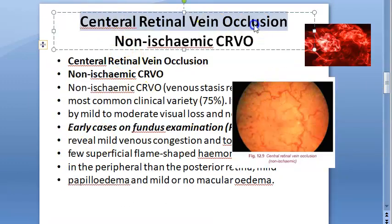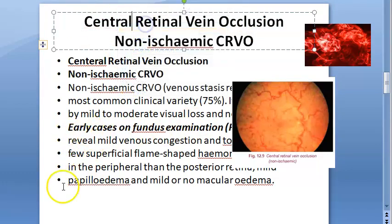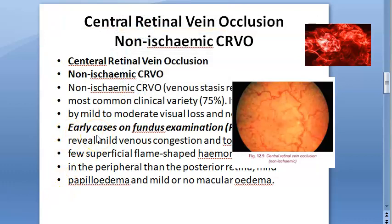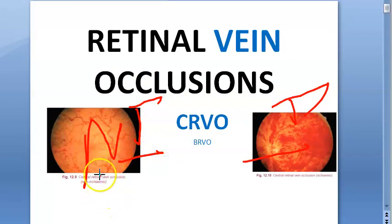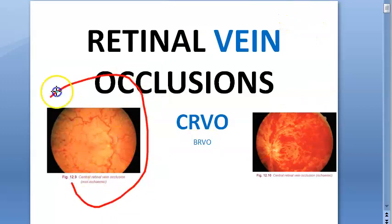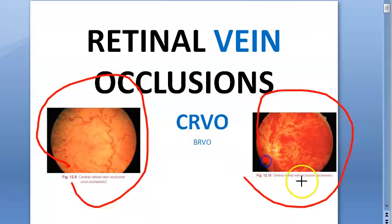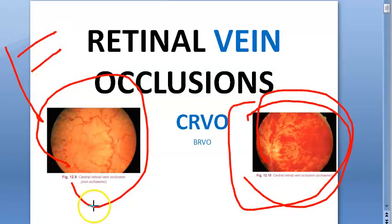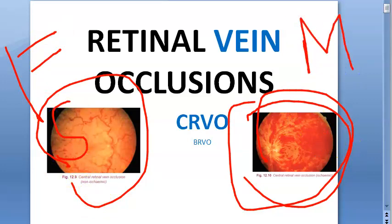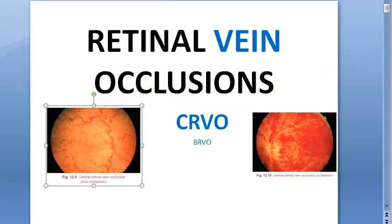Another important condition is central retinal vein occlusion, or CRVO. CRVO has two kinds: non-ischemic and ischemic. In the non-ischemic kind, you see flame-shaped hemorrhage, which is superficial. In the ischemic kind, you will find massive hemorrhage giving a blood-thunder or splashed-tomato appearance. So flame-shaped hemorrhage in CRVO is seen specifically in the non-ischemic type.